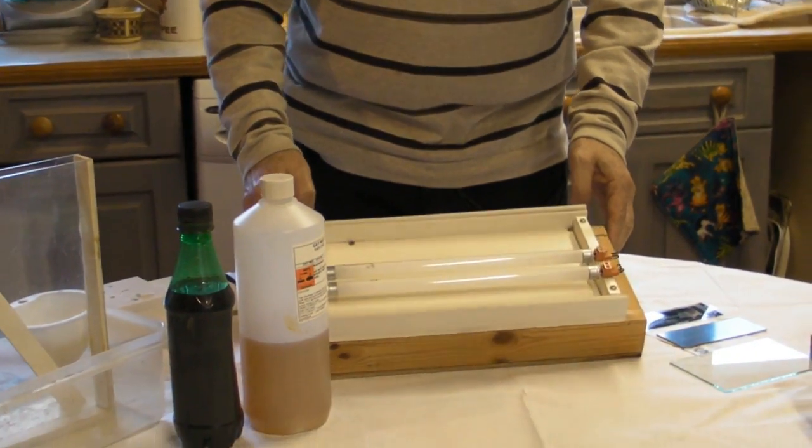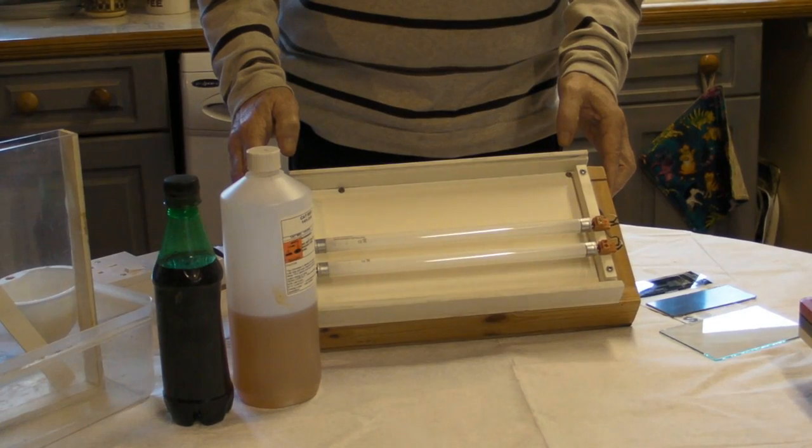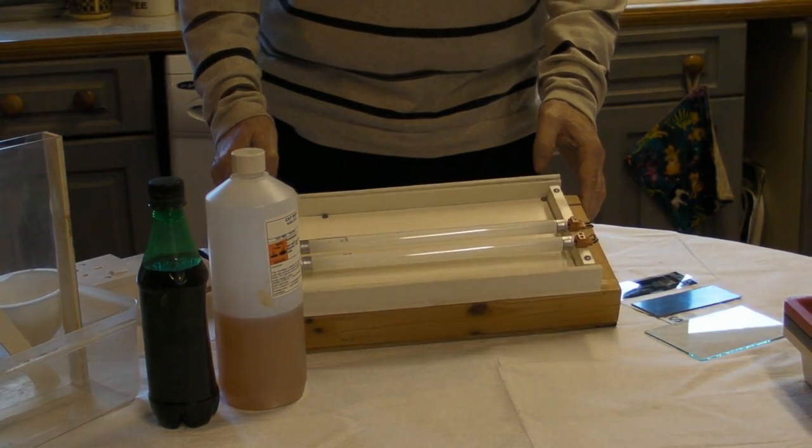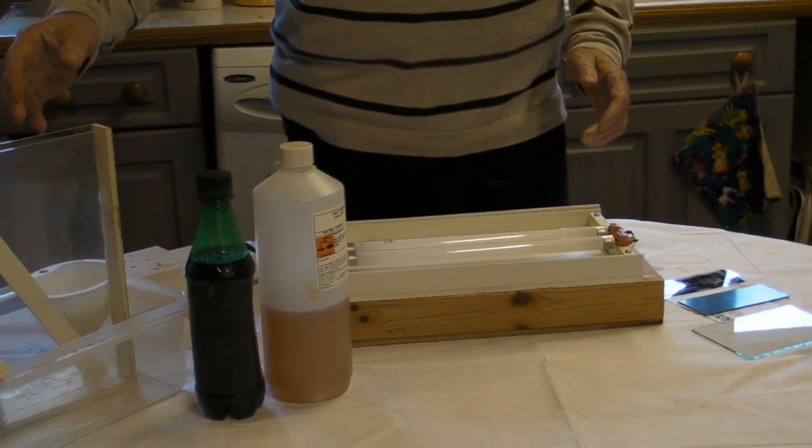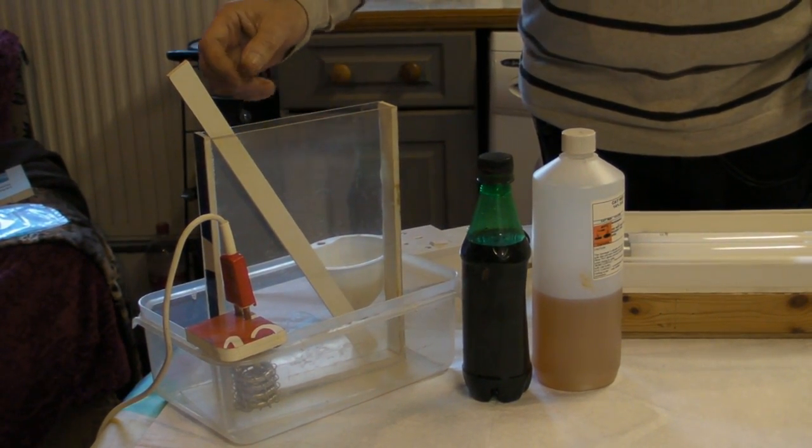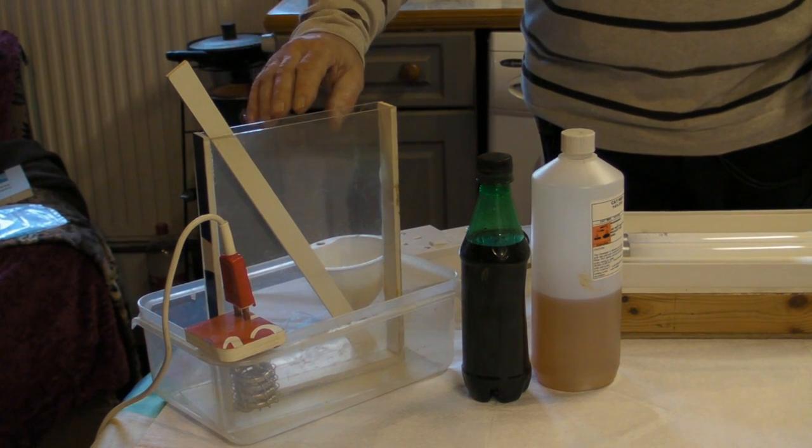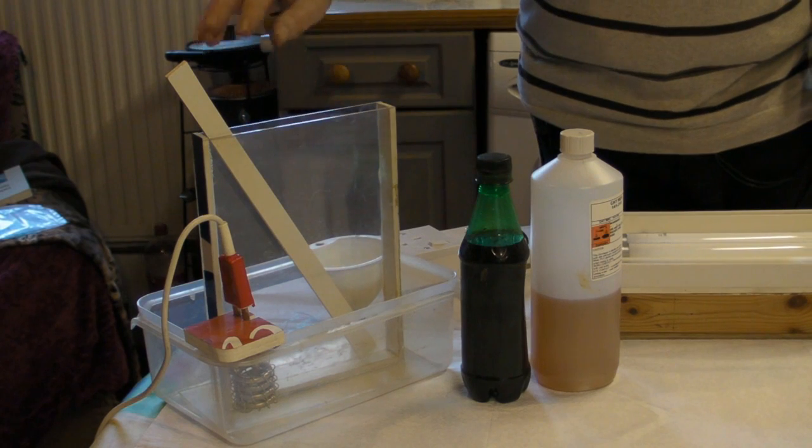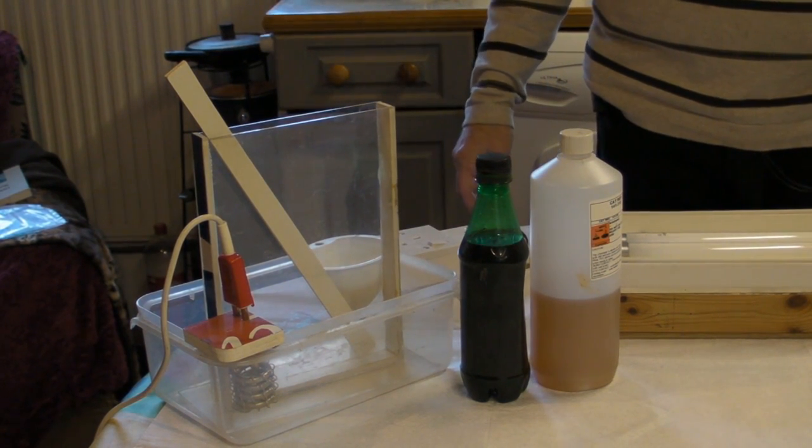The first thing we've got is a homemade light box with two ultraviolet tubes in it. We've got an etching tank and we're going to heat the chemicals up using water and the heater that you can see there.